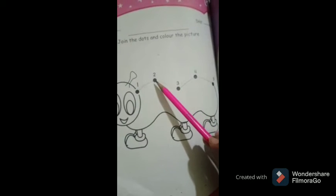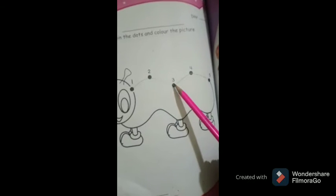Number one, number two, number three, number four, number five. Color the bee carefully.